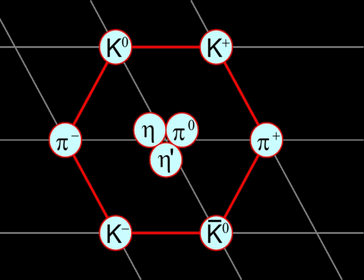Hadrons are defined as strongly interacting composite particles. They are either composite fermions — especially three quarks — in which case they are called baryons, or otherwise mesons. Quark models, first proposed in 1964 independently by Murray Gell-Mann and George Zweig, describe the known hadrons as composed of valence quarks and/or antiquarks, tightly bound by the color force, which is mediated by gluons.